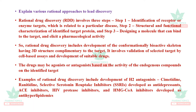Rational drug discovery involves three steps: Step 1 — identification of the receptor or enzyme target related to a particular disease; Step 2 — structural and functional characterization of the identified target protein; Step 3 — designing a molecule that can bind to the identified target and elicit a pharmacological activity. It involves development of conformationally bioactive skeletons with 3D structure complementary to the target, with validation by cell-based assays.